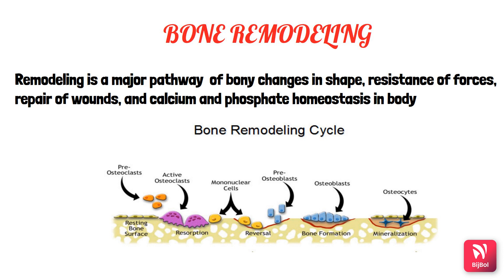This balance is regulated by local as well as systemic factors. Osteoblasts are the bone-forming cells, whereas osteoclasts are the bone-resorbing cells. In the bone remodeling cycle, resting bone surface has pre-osteoclasts converting into active osteoclasts that resorb bone; then osteoblasts move into the resorptive site and deposit new bone. If osteoblasts deposit an excess amount of bone at an active resorption site, this is called buttressing bone formation.